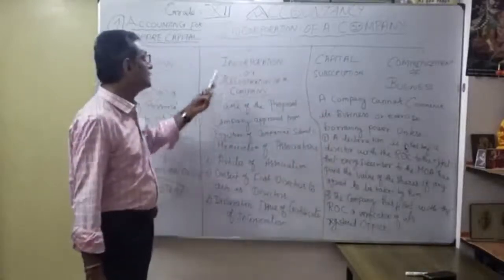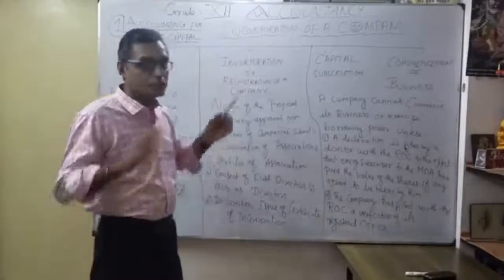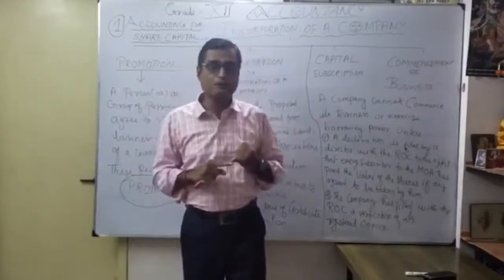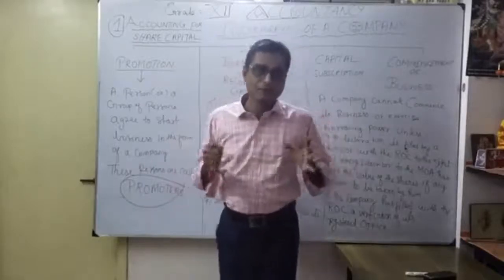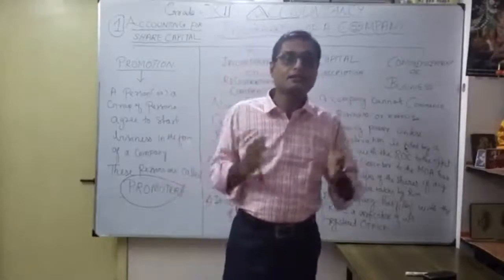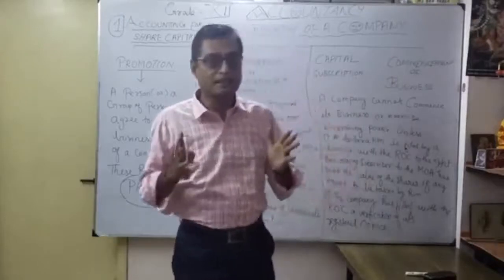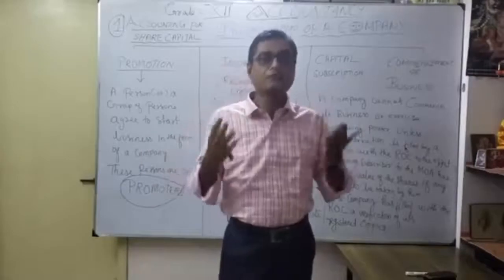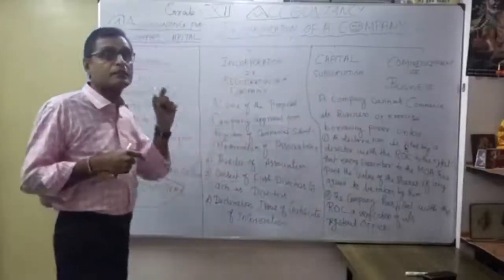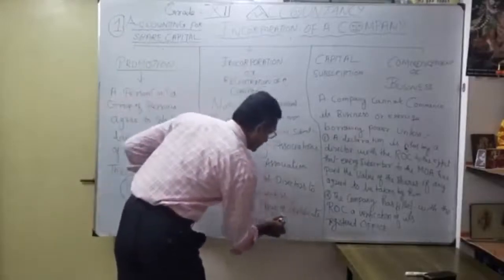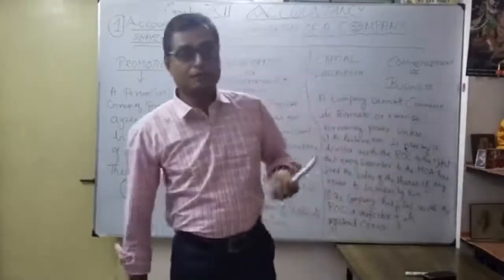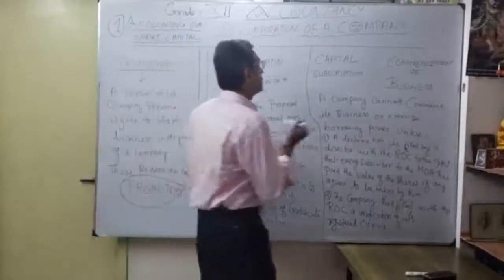So the four important points under incorporation are: one, Memorandum of Association; two, Articles of Association — management, office of the company; three, consent of first directors to act as directors; and four, declaration by the Registrar of Companies and issuance of the Certificate of Incorporation. You should keep these points in mind.